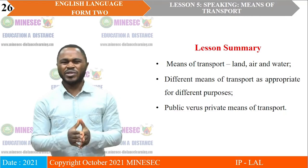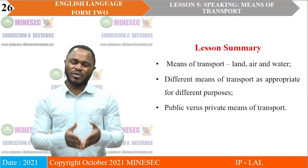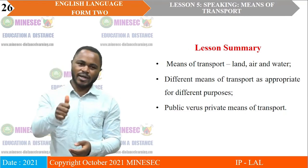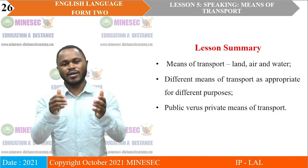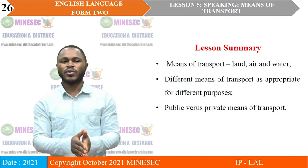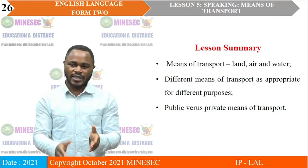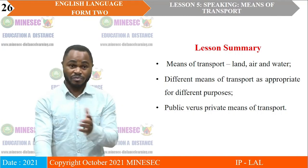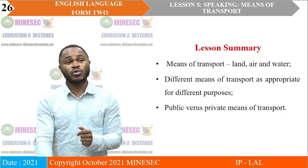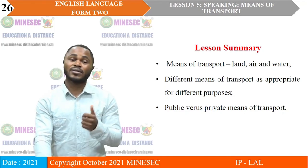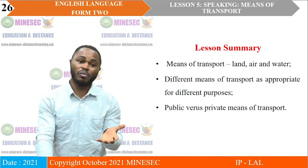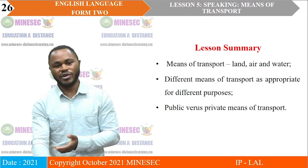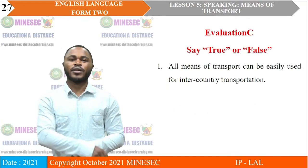What have we seen? We have seen that there are three major means of transportation — land, air, and water. We have seen that they can be used for different purposes, and we have also looked at them as being public in some cases and private in other cases.